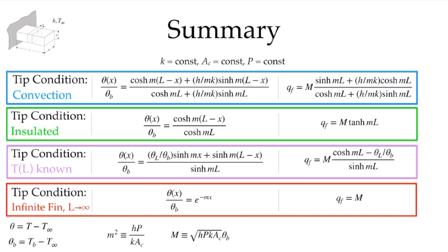The assumptions were that the conductivity was constant, the cross-sectional area was constant, and the perimeter of the cross-section was constant, which follows from the cross-sectional area being constant. Our four boundary conditions were convection from the tip surface, an insulated tip surface, a fin bridging two materials of different known temperatures, and finally an infinitely long fin. In this video, we're going to consider the convection, the insulated, and the infinite fin.